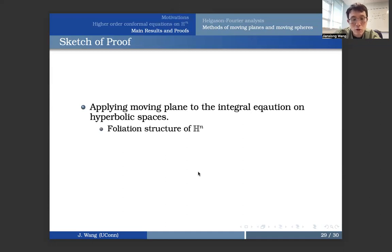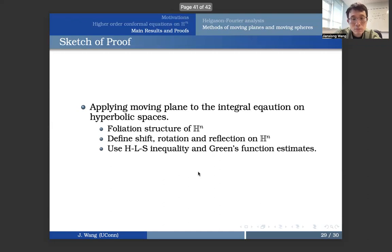Then after knowing the Helgason-Fourier transform, which shows the equivalence between the integral equation and differential equation and the precise estimate for the Green's function, we are able to apply the moving plane method to the integral equation on hyperbolic space. So first of all, you need to have the foliation structure, and then you have to define the shift, the rotation, and reflection on Hn. They are slightly different than the ones on Rn, but very similar. Lastly, we also have to use the Hardy-Littlewood-Sobolev inequality and Green's function estimates on hyperbolic space to ensure the plane can actually be moved either from the infinity or from the boundary, if we are considering the boundary value problem.